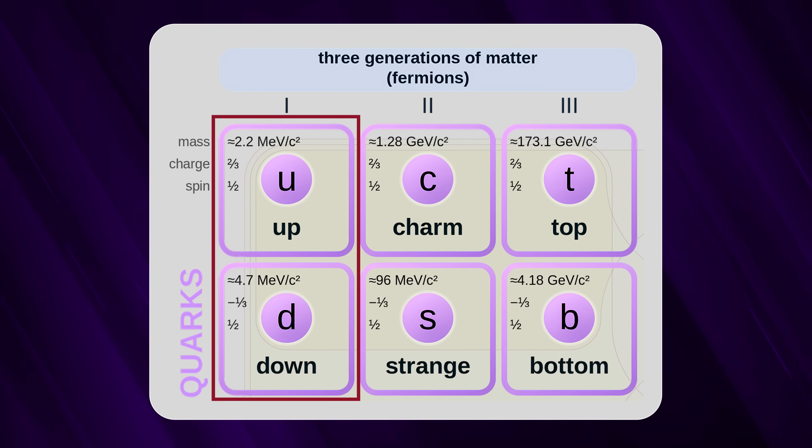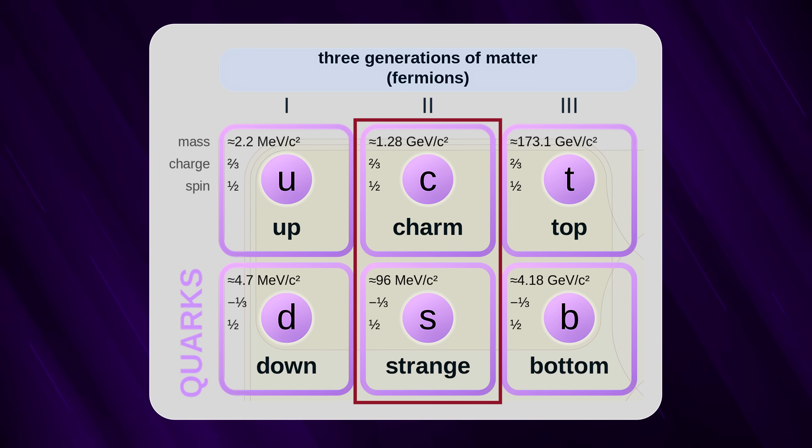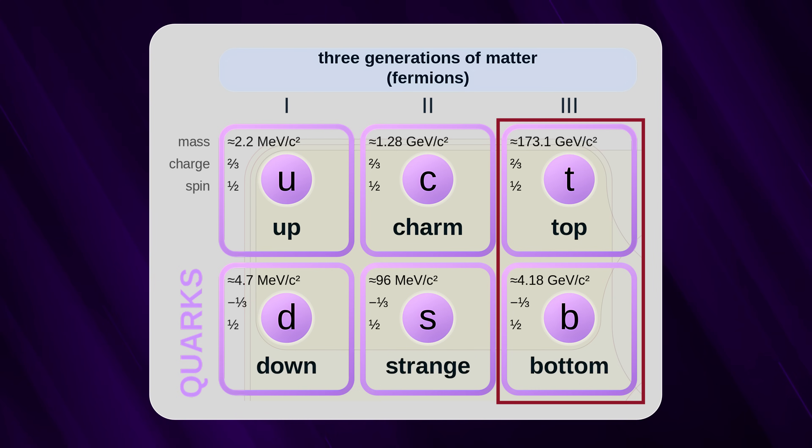Up and down, these are the most common and lightest of the bunch. Think of them as the basic building blocks. Charm and strange, a bit heavier than up and down quarks, these guys add some variety to the mix. Top and bottom, the heavyweight champions of the quark world. They're super unstable and exist for only a tiny fraction of a second.